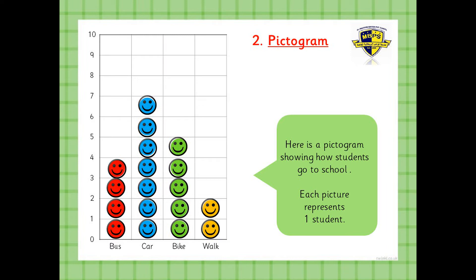Now the children who go by car in blue — one, two, three, four, five, six, seven. Get your ruler and put it at the top of the blue one at the tip and go to the left — you'll see number seven. And the children who go by bus — one, two, three, four. Get your ruler and put it across to number four and you'll see that there are four.